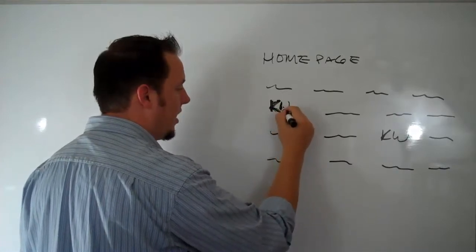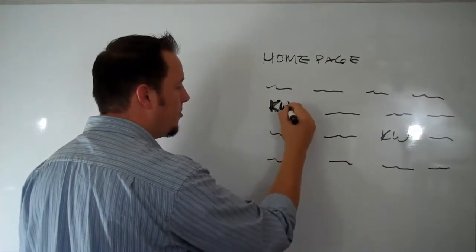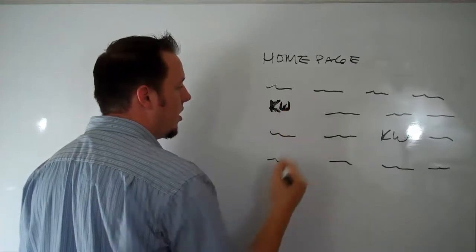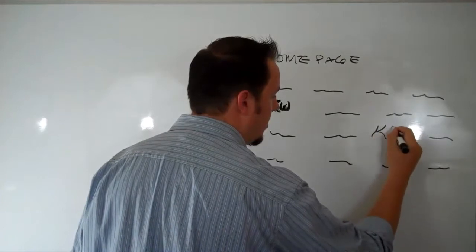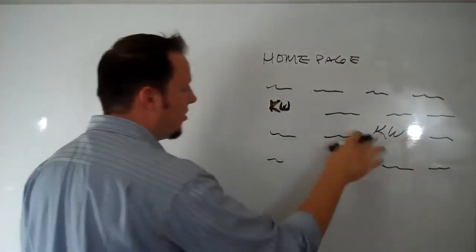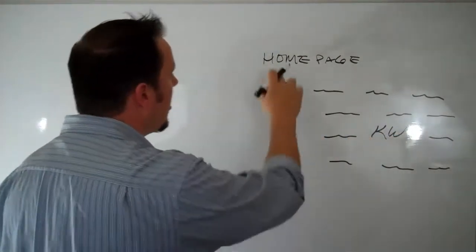So I'm just highlighting my little KWs here. But you can bold those. Alright. The other thing you can do is you can italicize them. Alright, so if you italicize them, you bold them.